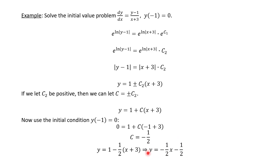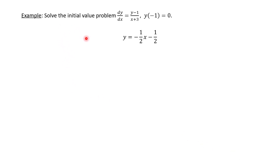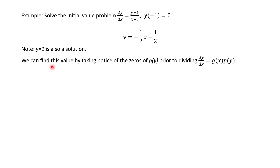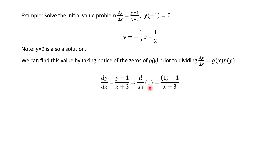Something worth mentioning: besides the explicit solution we just found, y = 1 is also a solution. You can find this by noting the zeros of the factor with y in it before dividing the differential equation. We divided both sides by (y minus 1), so setting that equal to zero gives y = 1. If you plug y = 1 into the original equation, the derivative of 1 is 0, and the numerator on the right side is also 0, so 0 over something equals 0 — it satisfies the equation. So sometimes you have your explicit solution and also need to check for solutions that arise when you divide by zero.